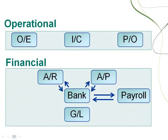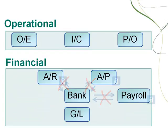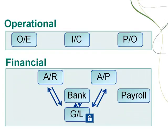Similarly, you should not lock AR, AP, or payroll if you need to post bank reconciliations or reversals. You should also make sure you create and post all outstanding GL batches for a fiscal period before you lock it for GL.